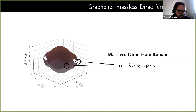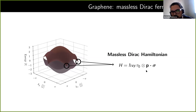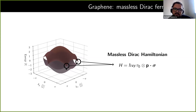Those two points are non-equivalent and are called the two valleys of graphene. If you take a low energy approximation, you find that this dispersion is actually linear — just like a Dirac Hamiltonian for electrons with no mass. So when we are talking about Dirac systems, we are talking about systems for which the effective Hamiltonian has a linear dispersion for low energies, at least near the points where any two bands cross.